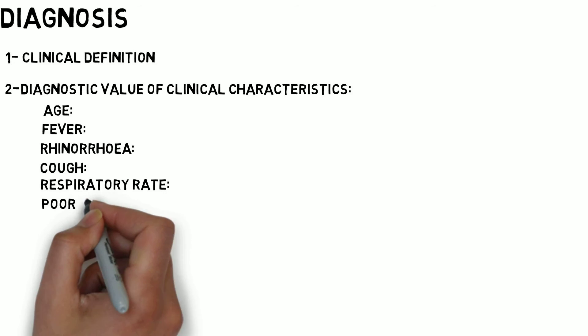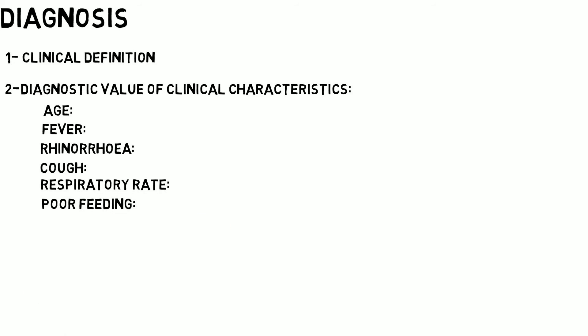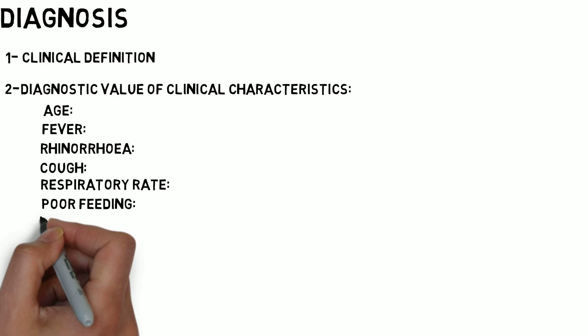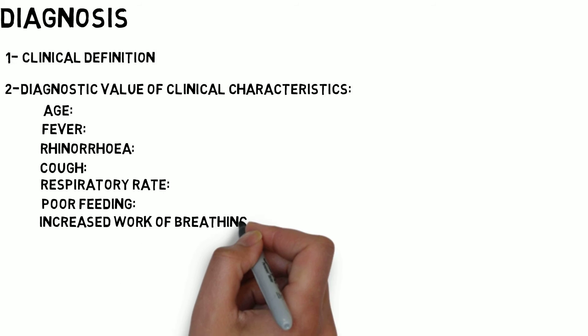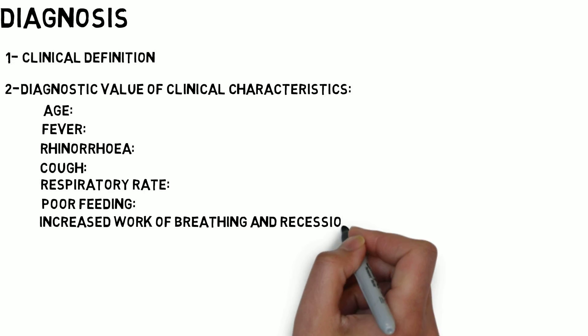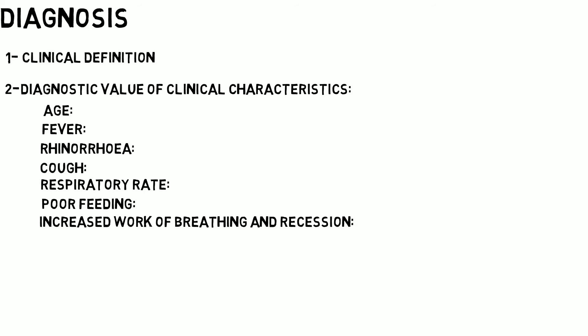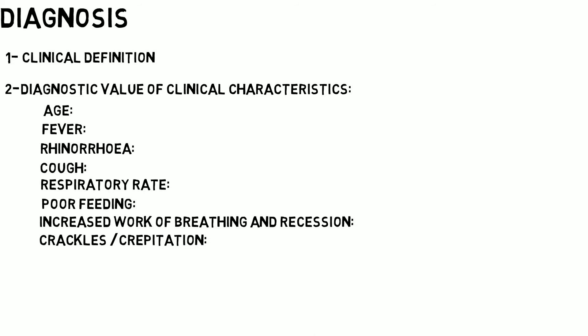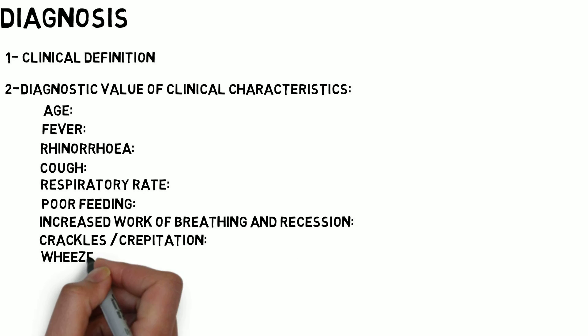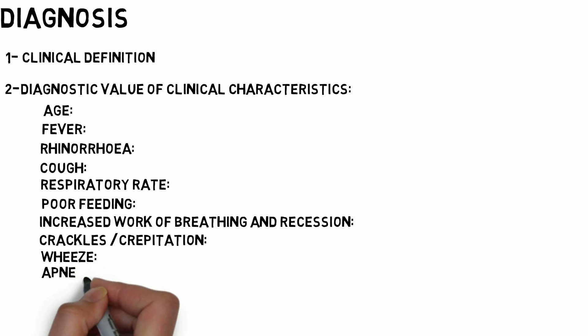Poor feeding is common in infants with bronchiolitis due to dyspnea, but is not essential for diagnosis. Increasing work of breathing and recession — including subcostal, intercostal, and supraclavicular recession — are commonly seen. Fine respiratory crackles in all lung fields are common. High-pitched expiratory wheezing is a common but not universal finding. Apnea can be a presenting feature, especially in young, premature, or low-birth-weight infants.